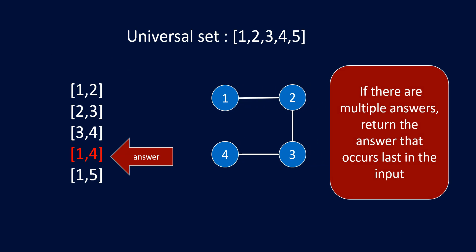If there are multiple answers, return the answer that occurs last in the input. As mentioned earlier, this is a contradictory statement because there is only one edge added, meaning there can only be one cycle. So both statements are contradictory and would not conflict in this question. Once we get the edge that is forming a cycle, that edge is our resultant answer.